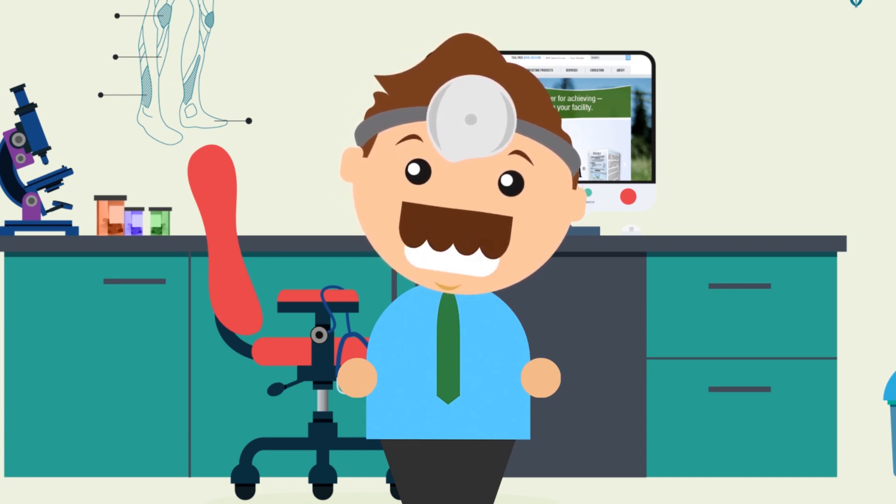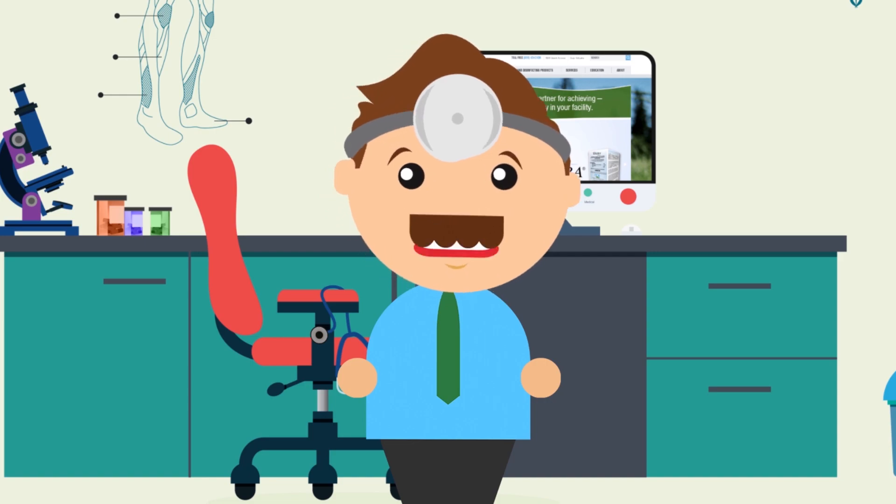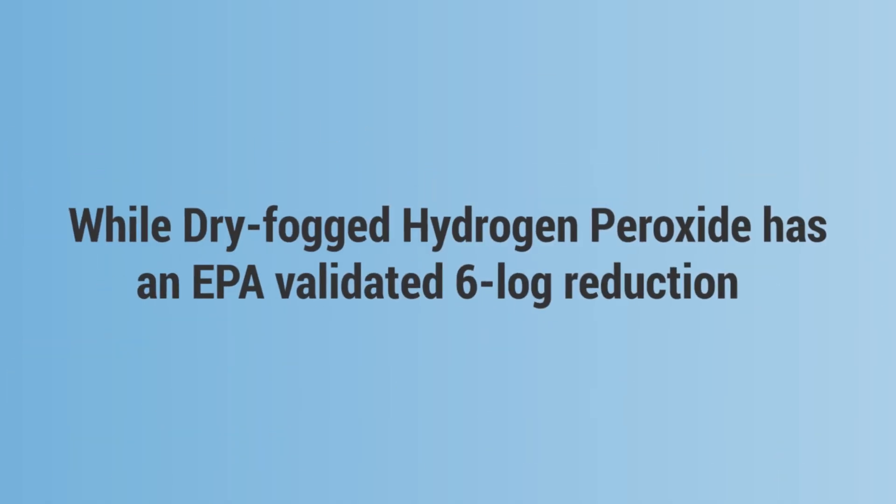While hydrogen peroxide vapor treatments boast a 6 log reduction according to the EPA, UV light isn't a chemical disinfectant, and therefore it isn't under the EPA's jurisdiction.